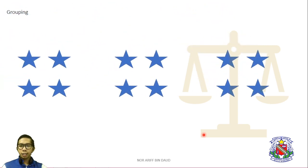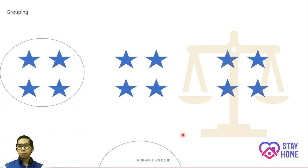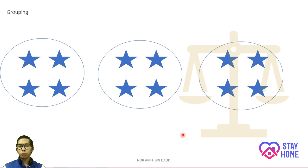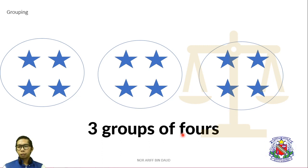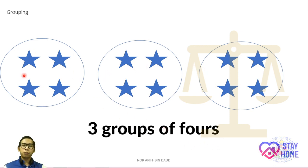Okay, I have stars here. Let's put these stars in a group. 1 group of stars, 2 group, 3 group of stars. So we have 3 groups of 4. 3 groups stands for 3 groups we have here, and 4 means we have 4 stars in each group.